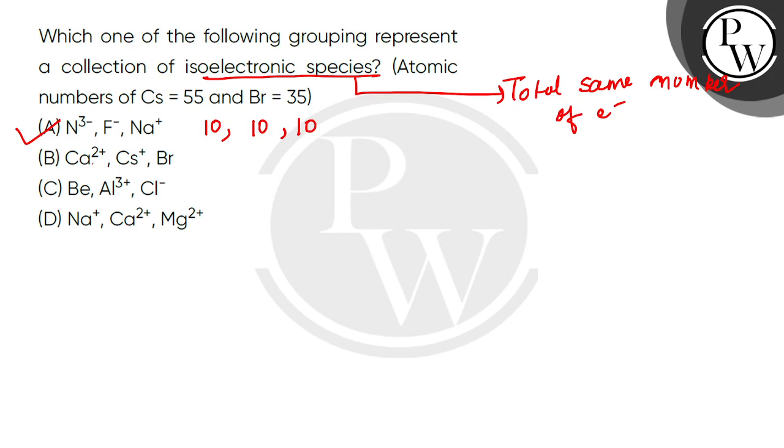Now let's see calcium. Calcium atomic number is 20, so Ca2+ has 18 electrons. Cesium is atomic number 55, so Cs+ has 54 electrons. Bromine atomic number is 35, so neutral Br has 35 electrons. The electron counts are different, so you cannot choose this option.